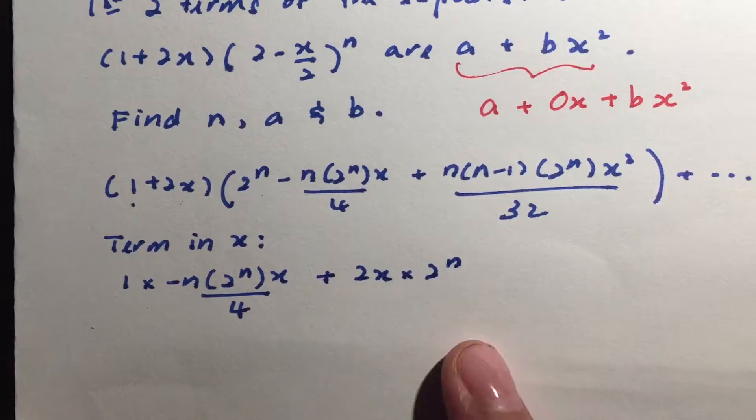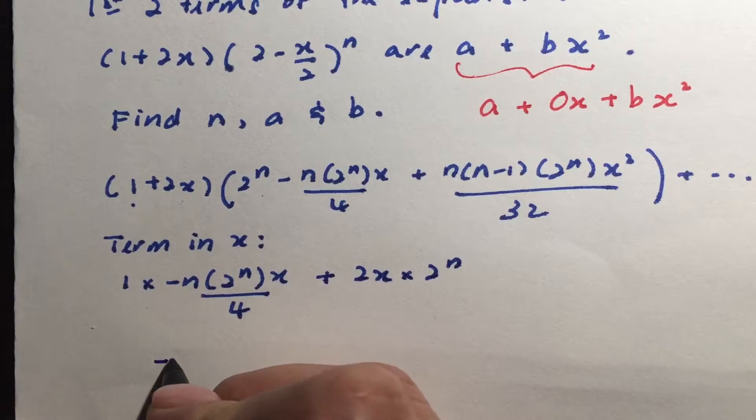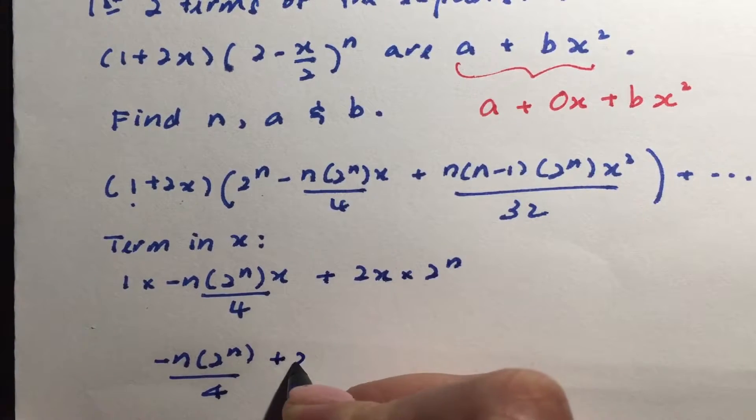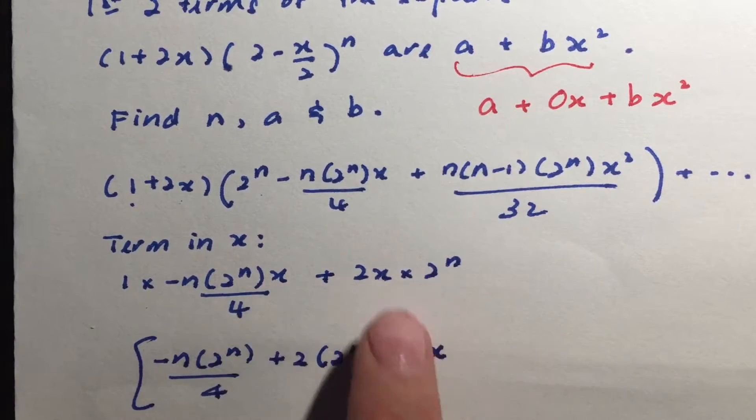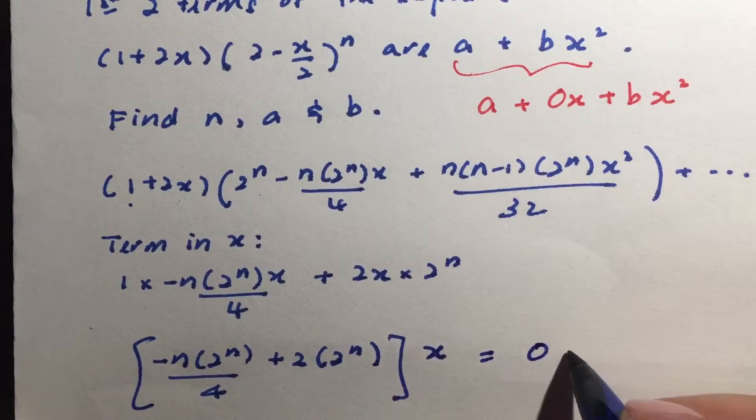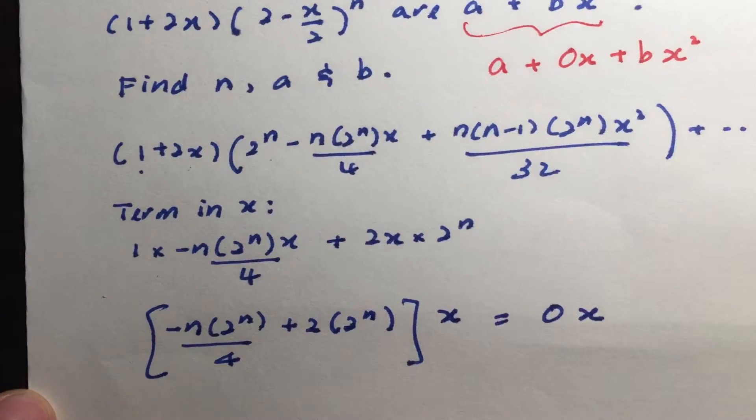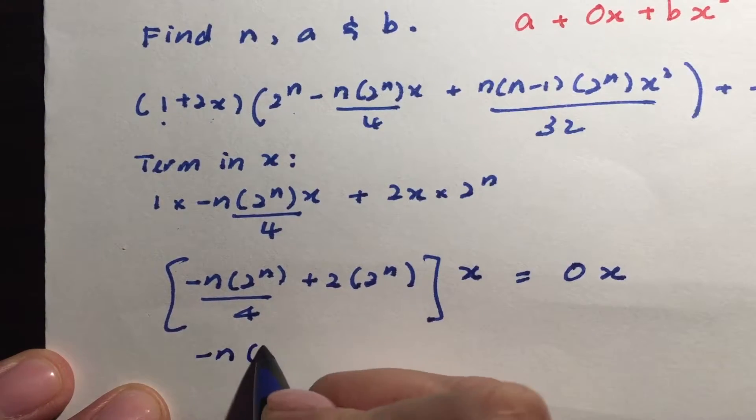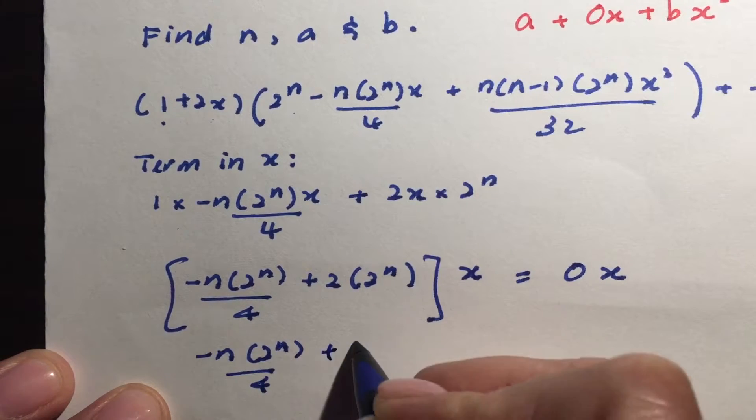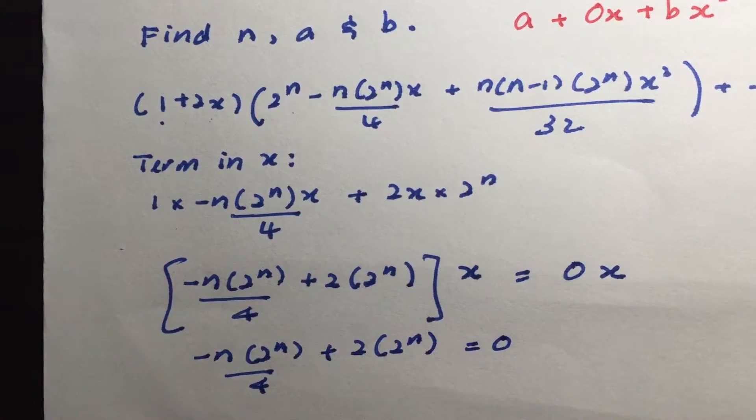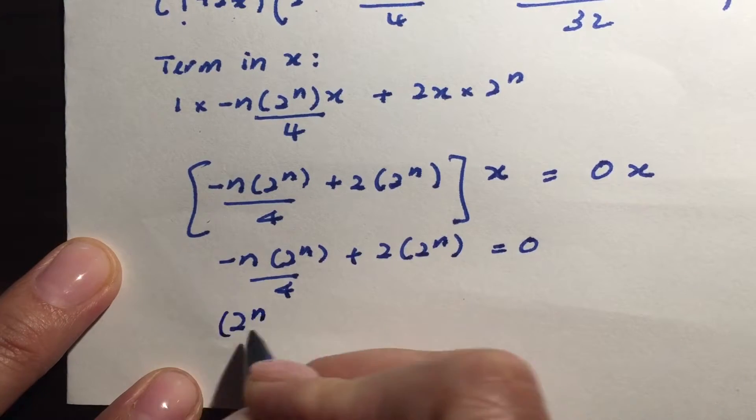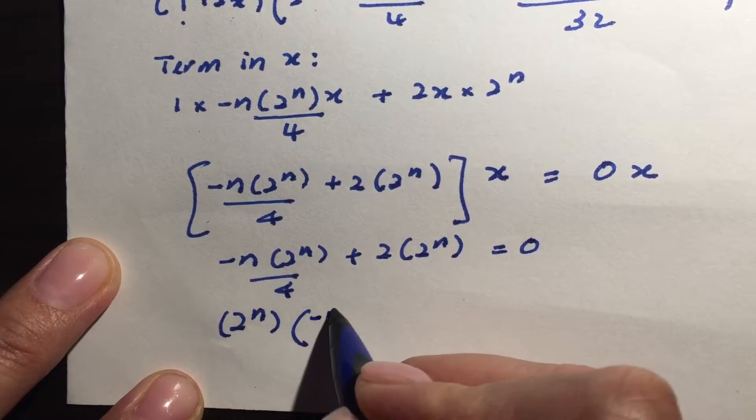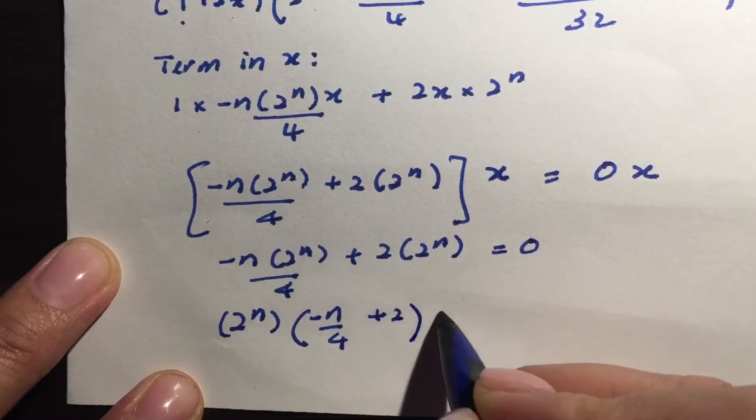So now, if I tidy it up, this will be the same as negative n to the power of n over 4 plus 2 to the power of n. And this whole thing will be x. I'm sort of like pulling out the x term. So this must be the same as 0x. Because I have 0x. In other words, I can actually compare the coefficient which is this part to this. So I can say that negative n to the power of n over 4 plus 2 to the power of n must be equal to 0. And what I can do is that you realize that 2 to the power of n and 2 to the power of n, I can factorize it out. So I'm left with negative n over 4 plus 2 will give me 0.